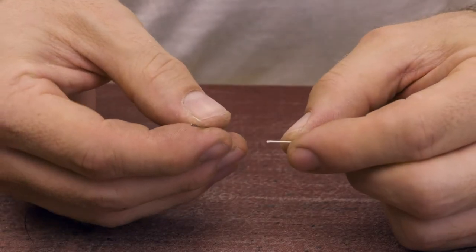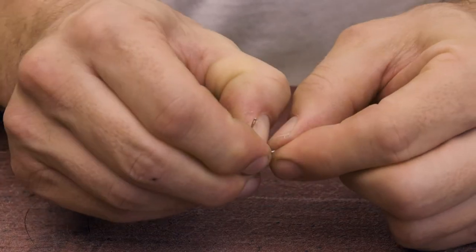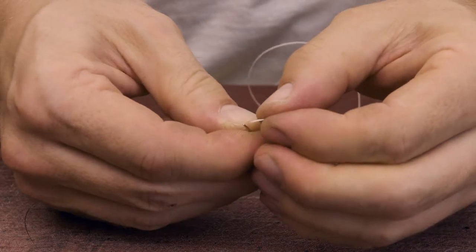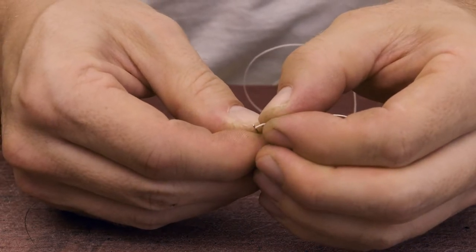First off, we're going to thread the needle. We're going to want to pinch the tip of the thread, or I like to bite it, to make it flat so we can slide it through the eye of the needle.